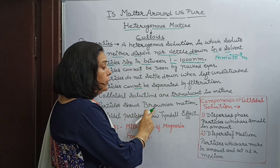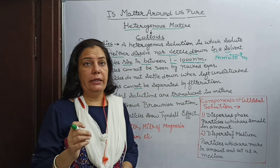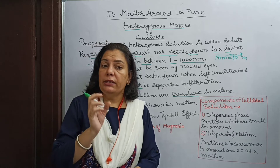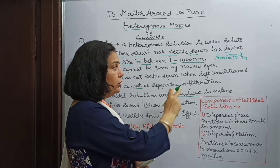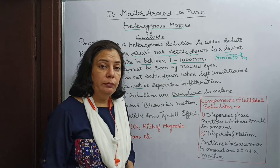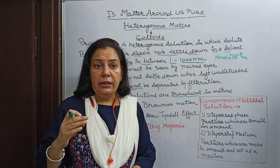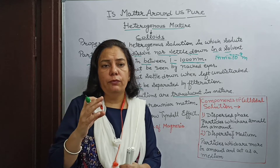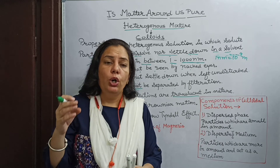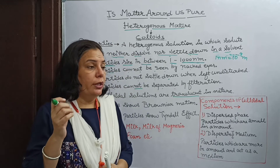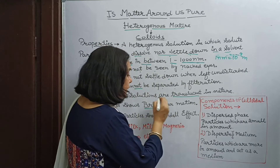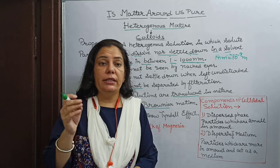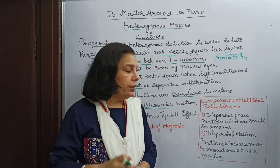Colloidal particles show Brownian motion, which is a zigzag motion. The reason is that solute particles are very small in size — 1 to 1000 nanometer. When they are hit by solvent particles with different forces in different directions, they move in a zigzag path. Brownian motion is named after the scientist Brown, who discovered that particles hit each other and move in a random zigzag path.